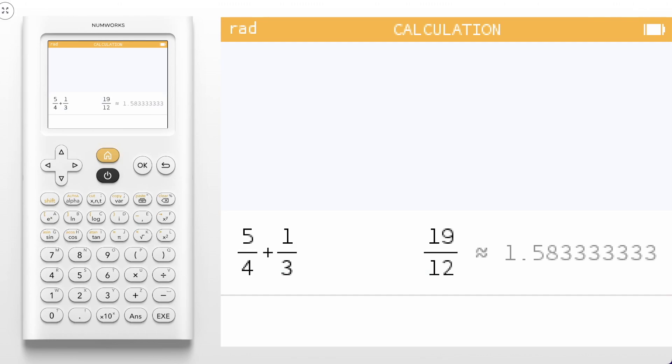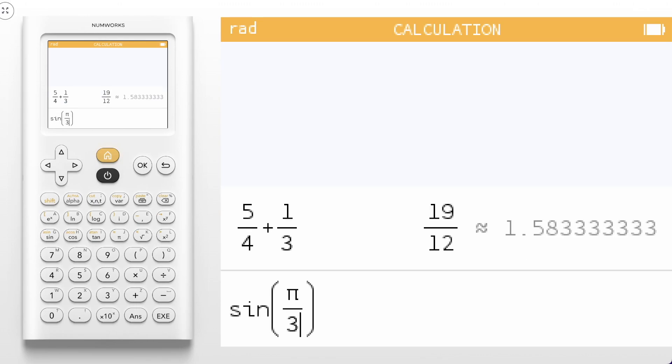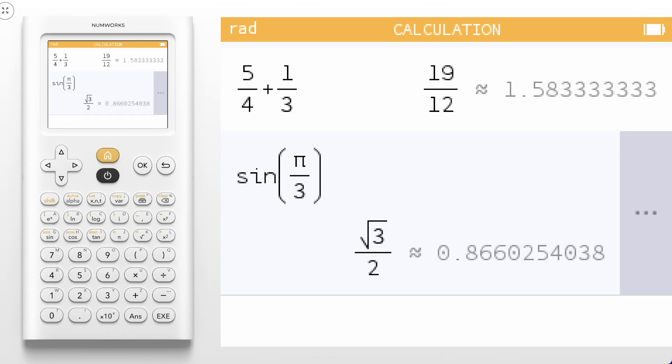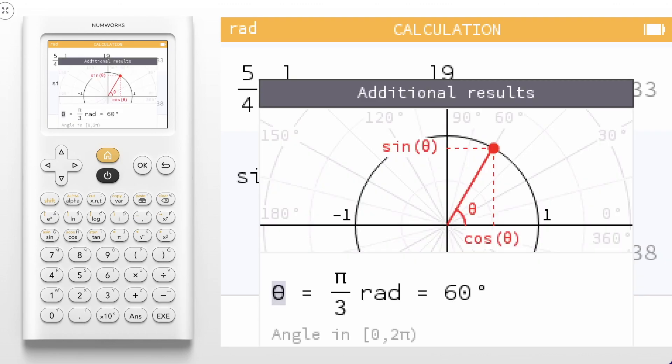Even better, most calculations will include some additional results. For example, if we evaluate sine of pi over 3, we can navigate up and over to open our additional results and see the unit circle representation.